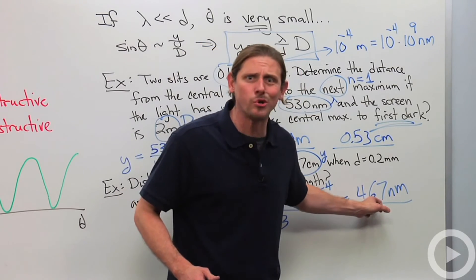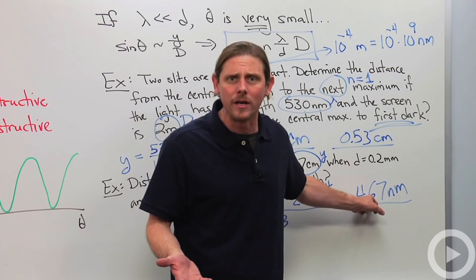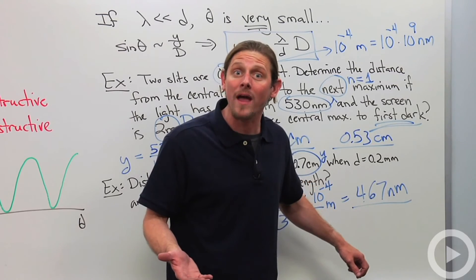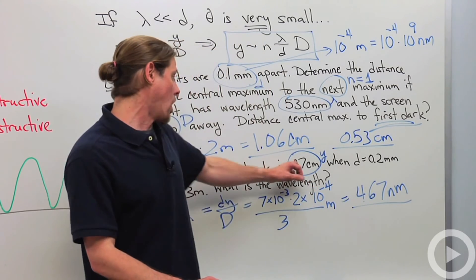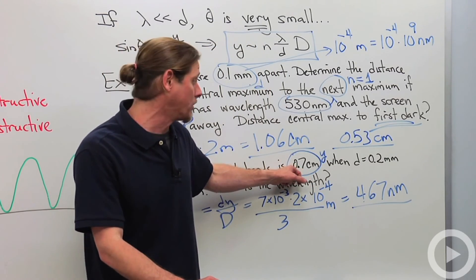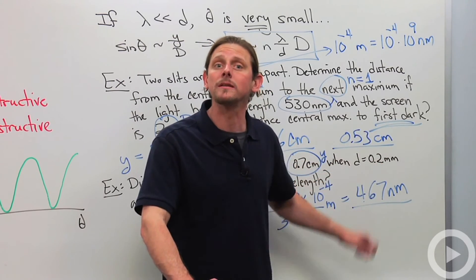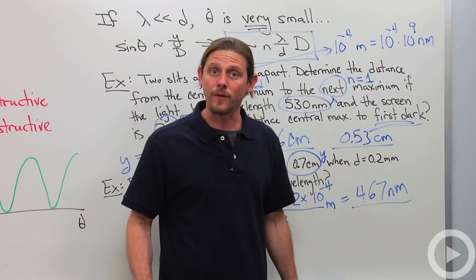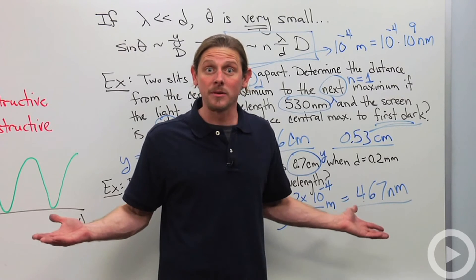But anyway, so this actually allows us to measure the wavelength. I mean, this is a really short distance. You can't even see that, really. But I can measure that wavelength by using much larger distances, 0.7 centimeters and 0.2 millimeters, using this idea of wave interference. And that's the double slit experiment.